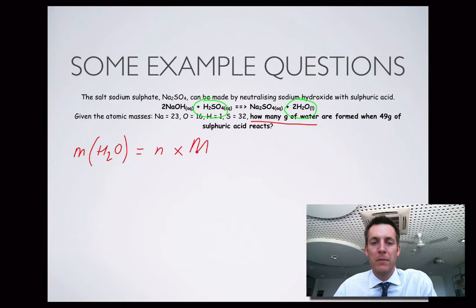I can always find molar mass from the periodic table, so only one of these things I don't know. Is the number of moles of water related to the number of moles of sulfuric acid? Well, I've got a two to one ratio. So the number of moles of water is two compared to the number of moles of sulfuric acid, which is one.